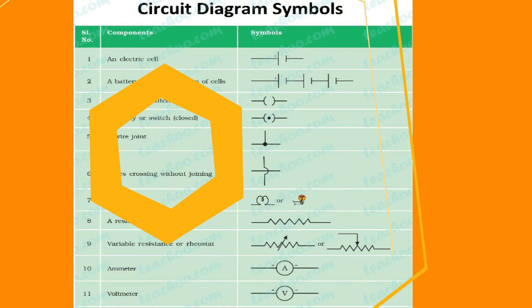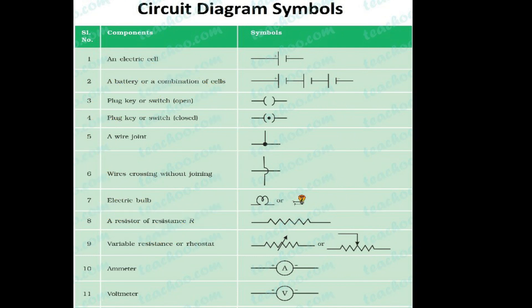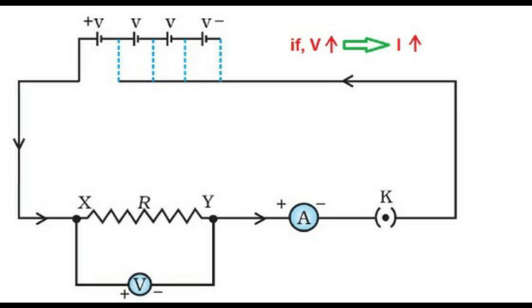Till now, we have understood the basics of electricity. Now, let us see the elements used in electrical supply. There are many elements used in electrical supply, and these are some components and their symbols. Now, tell me — is there any relation between electric potential and current? Let us find out.